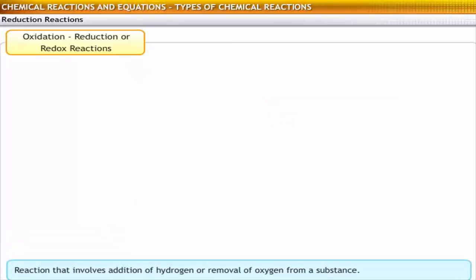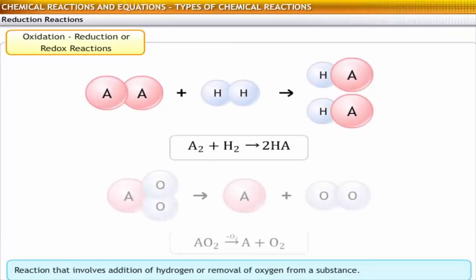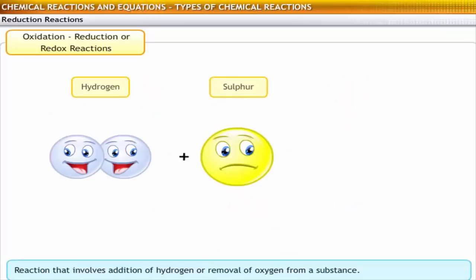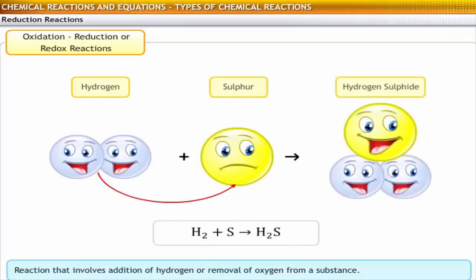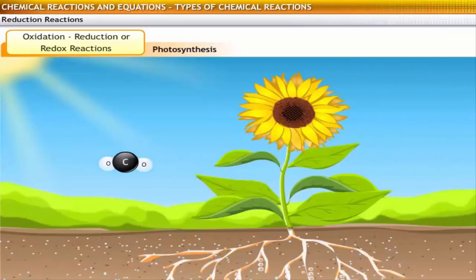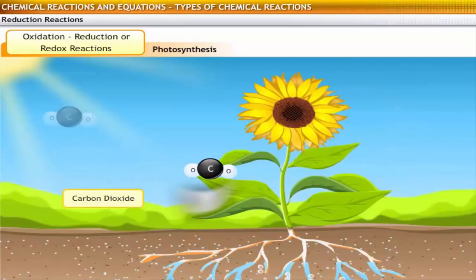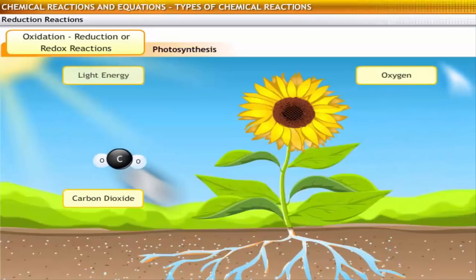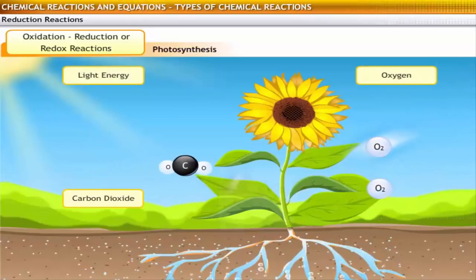A reduction reaction involves the addition of hydrogen or the removal of oxygen from a substance. It is exactly the opposite of an oxidation reaction. For example, the formation of hydrogen sulfide involves a reduction reaction. In this reaction, when hydrogen is added to sulfur, sulfur gets reduced to hydrogen sulfide. Another example of a reduction reaction is photosynthesis, where in plants, carbon dioxide and water are reduced to carbohydrates in the presence of light and the pigment chlorophyll.